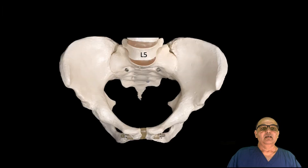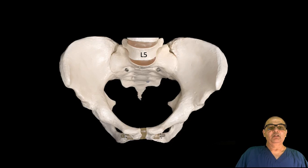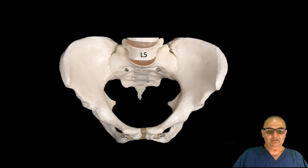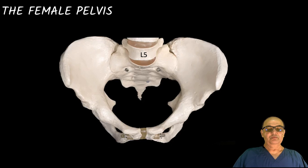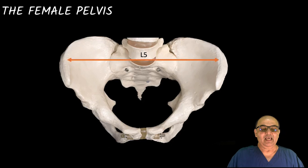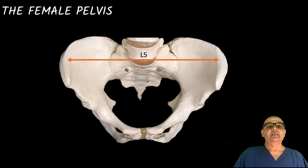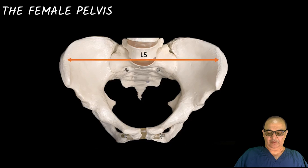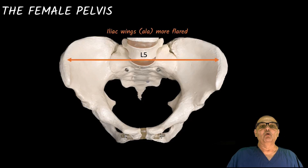I'll be using the same images of the models which we have seen so far. Now let's have a look at this female pelvis. The features which are going in its favor — why I'm calling this a female pelvis — is because the ala of my hip bone, the coxal bone, they are wide apart and they are more flared.